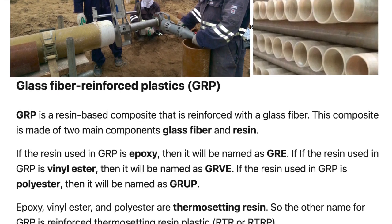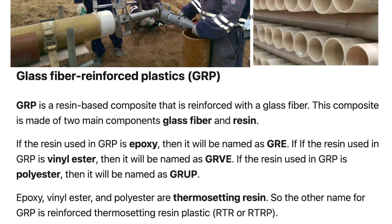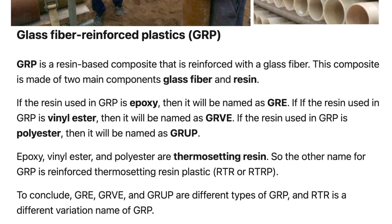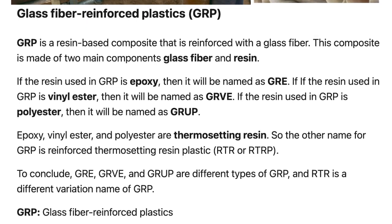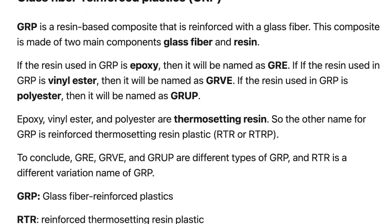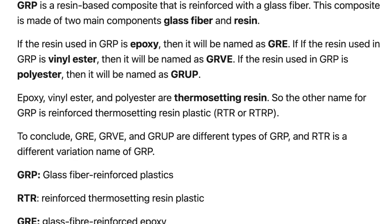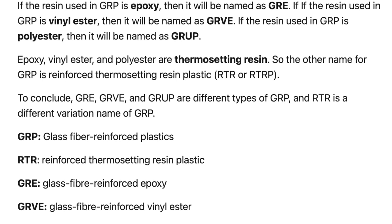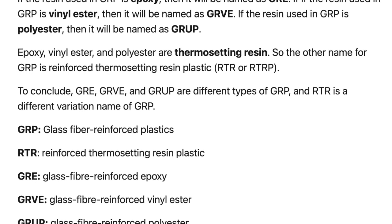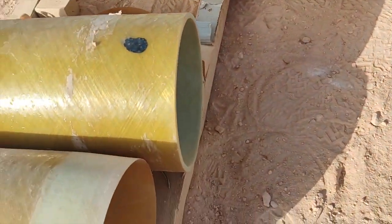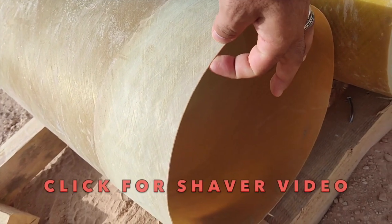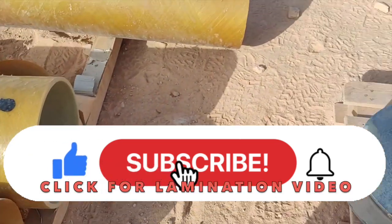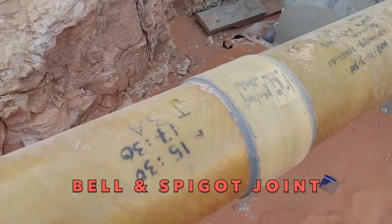What is FRP versus GRP versus GRE? FRP is the general term for glass fiber reinforced composite materials — it is the general term for glass fiber reinforced plastics which contains both GRE and GRP. FRP is composed of matrix materials and reinforced material. Due to different matrix materials, some are called GRE and some are called GRP. GRP, GRE, and GRV are abbreviations for specific types of RTR pipes. Epoxy, vinyl ester, and polyester are the thermosetting resins. Depending on the resin system used in manufacture: GRP pipes use isophthalic resin, GRE pipes use epoxy resin, and if the resin used is polyester it will be named GRUP. The reinforced thermosetting resin RTR is also known as GRP.